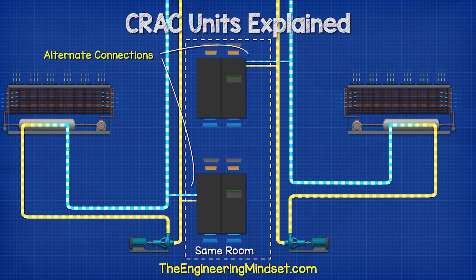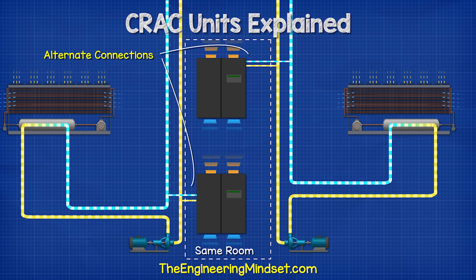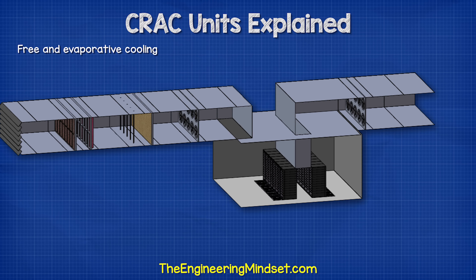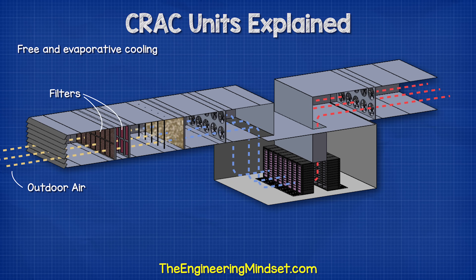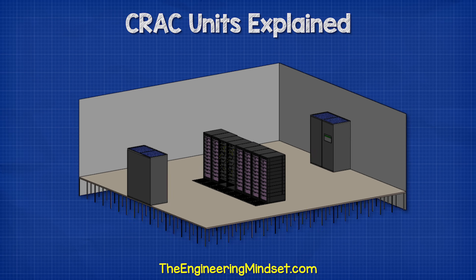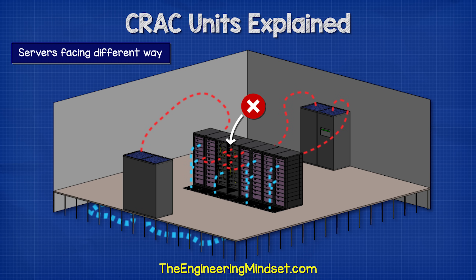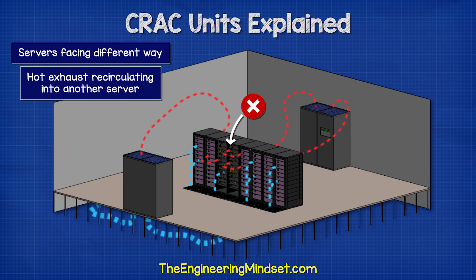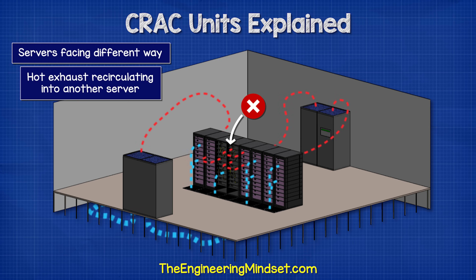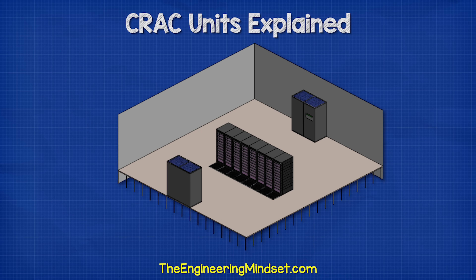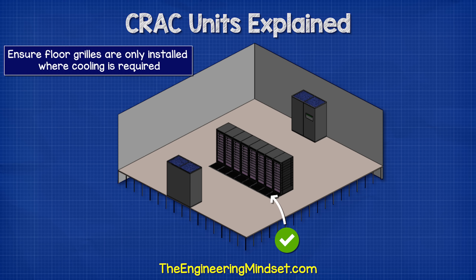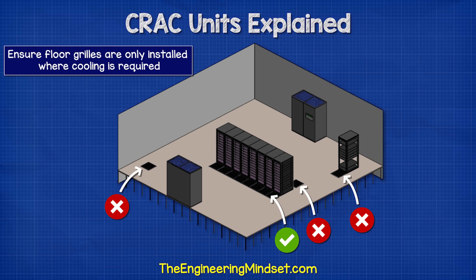Some data centers also connect alternate CRAC units to different cooling systems to ensure resilience. Newer data centers built in cooler climates do not use refrigerants at all. For efficient design, we need to ensure all servers face the same way, so they all suck cold air in at the front and blow hot air out the back — otherwise the exhaust of one server will be sucked into the inlet of another. Floor grills should only be installed where cooling is required: at the front of the servers, not at the exhaust side, not in open areas, and not in front of empty racks.